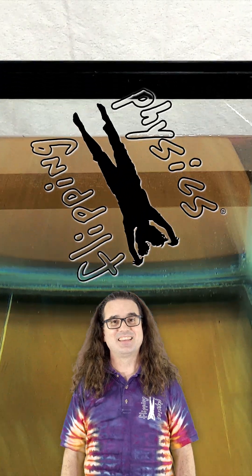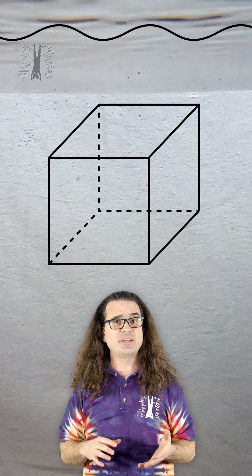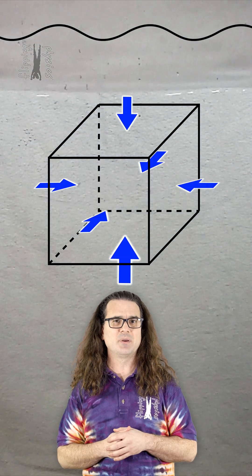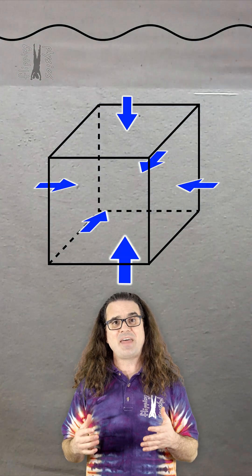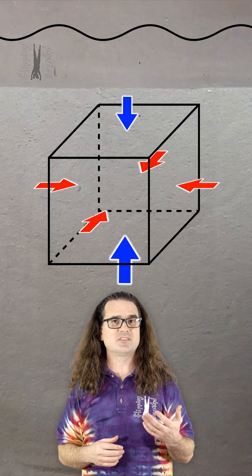Let's dive into this tank of water and visualize a hypothetical cube submerged in the water. Because pressure increases with depth, there is pressure pushing inward on all six sides of this hypothetical cube, and the forces from that pressure acting inward on all four vertical sides of the cube all cancel one another out.